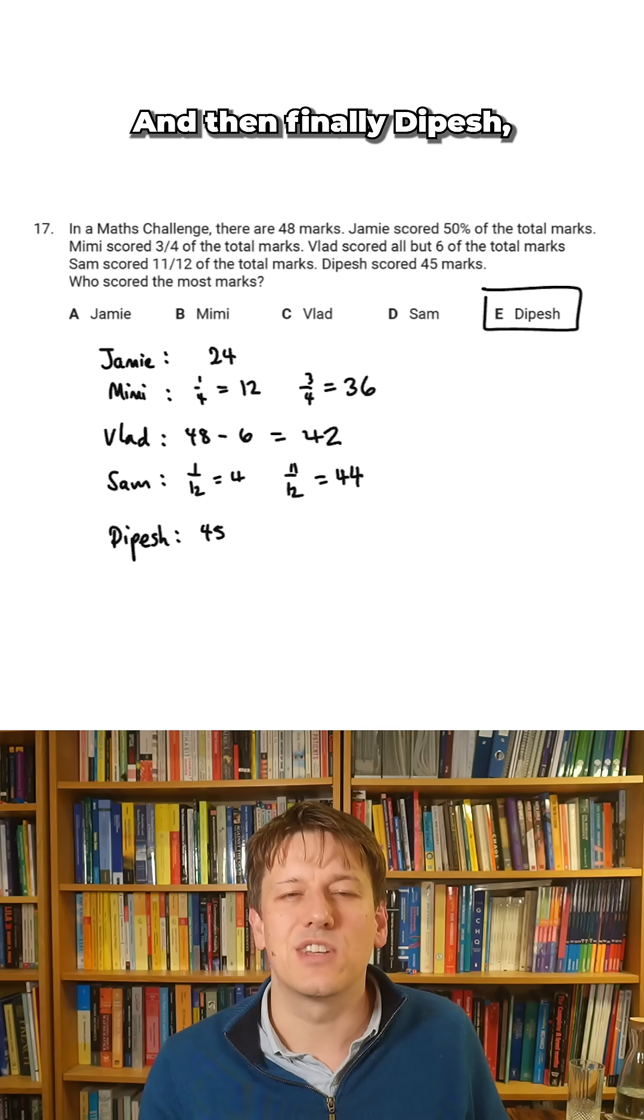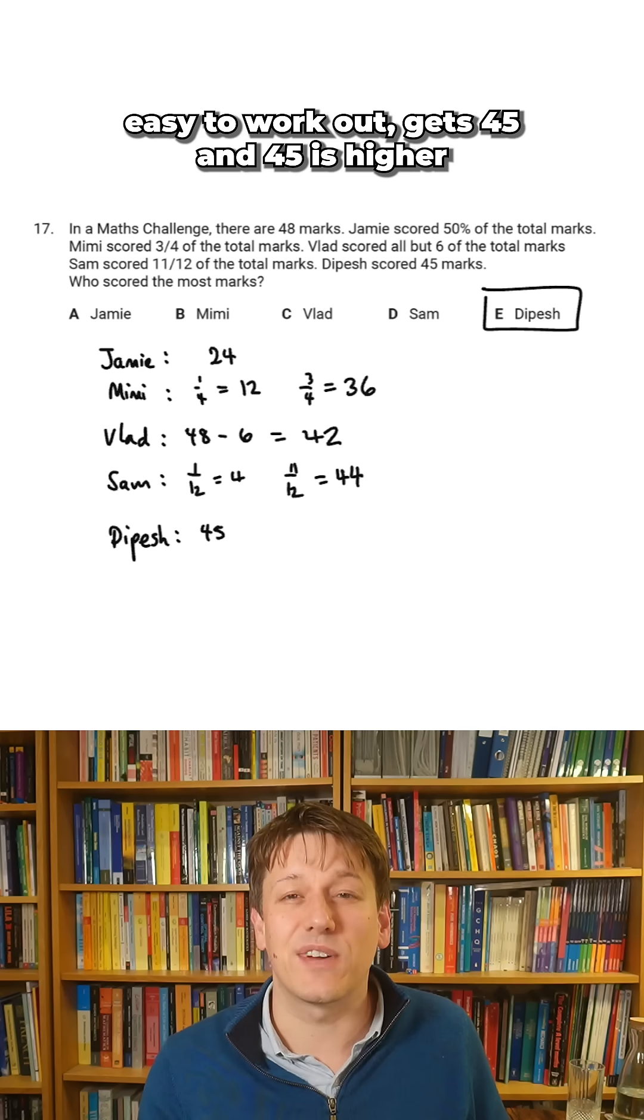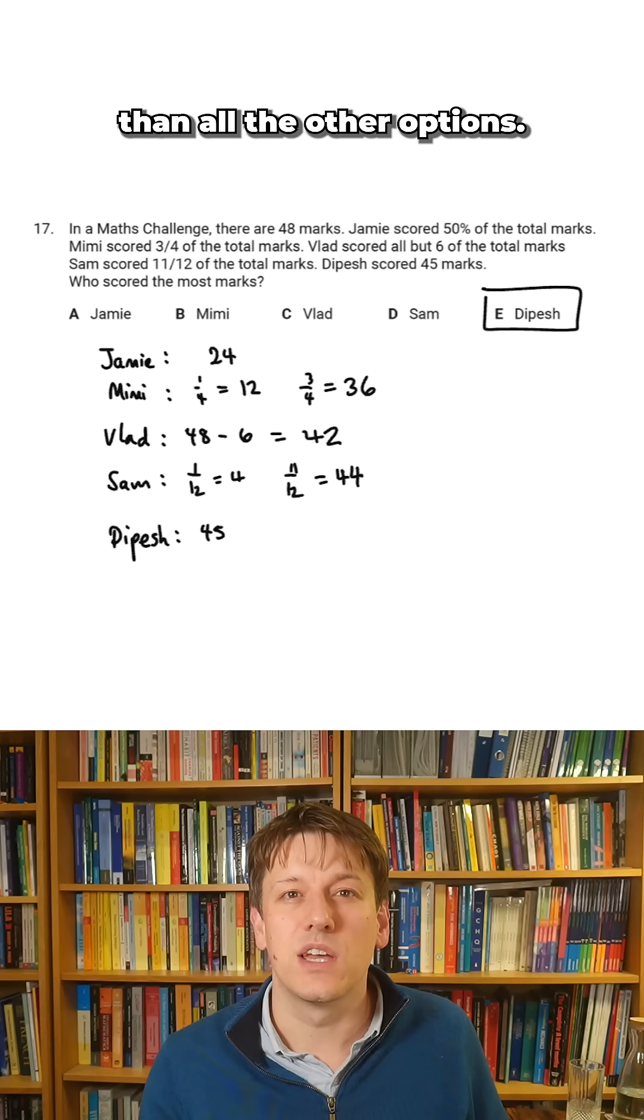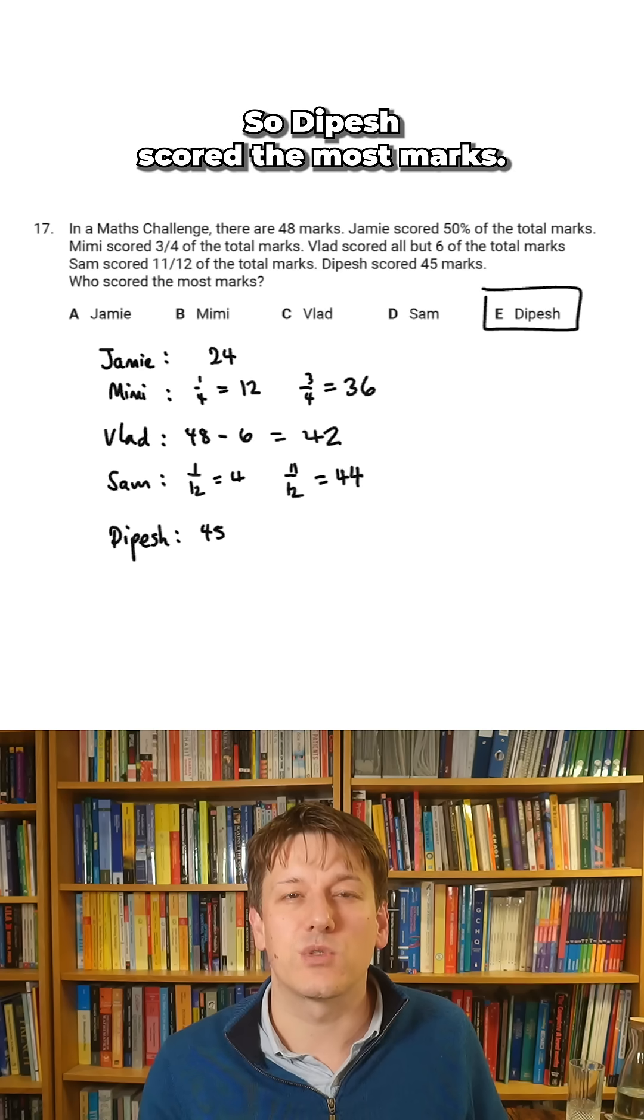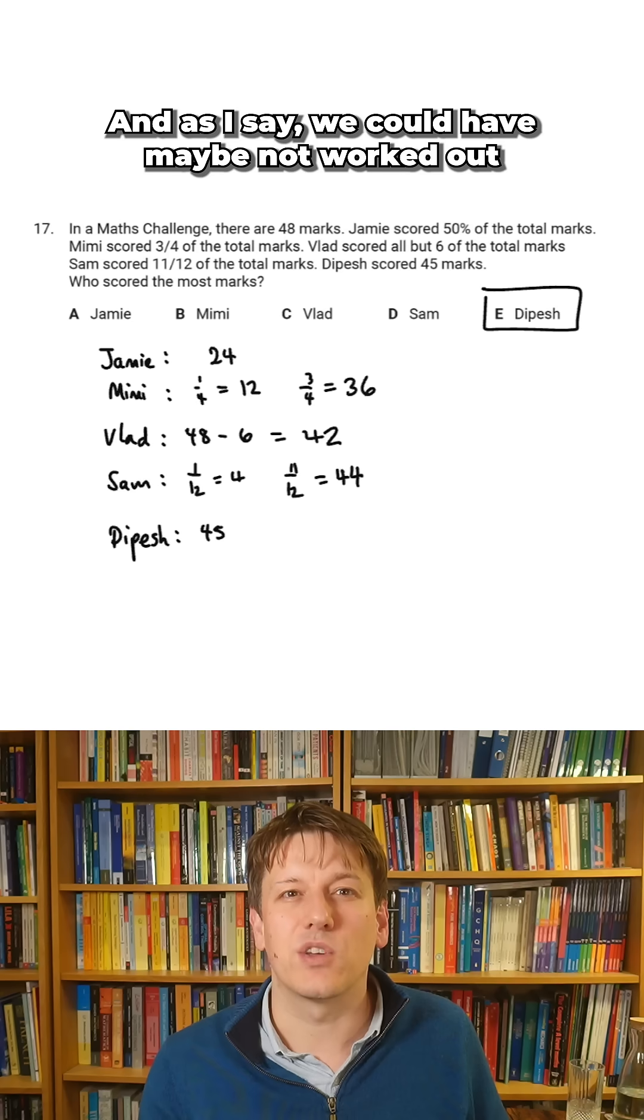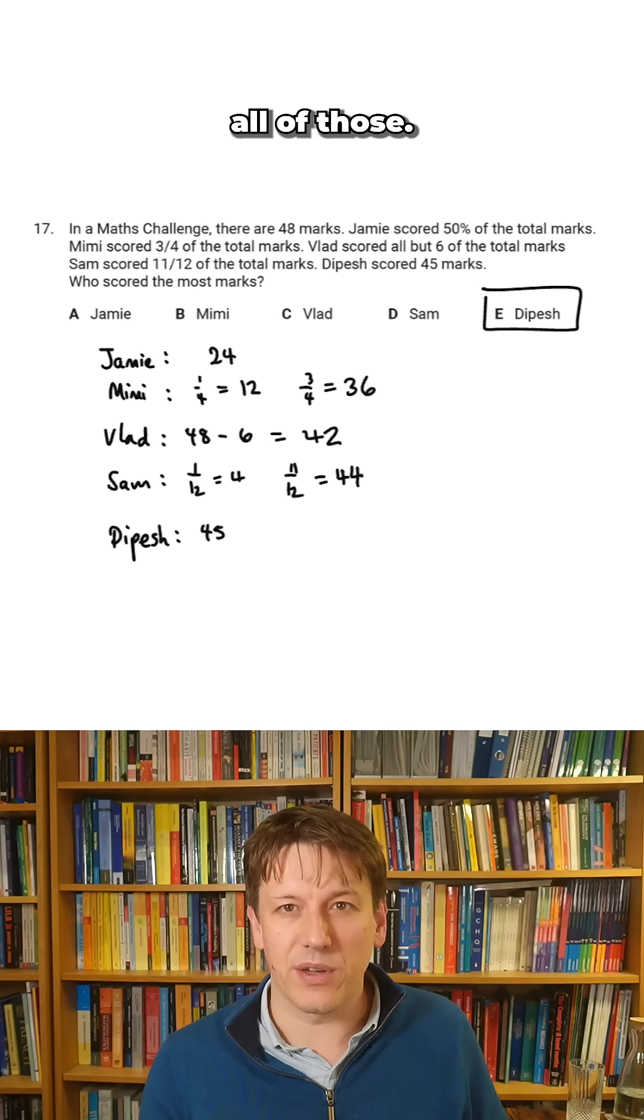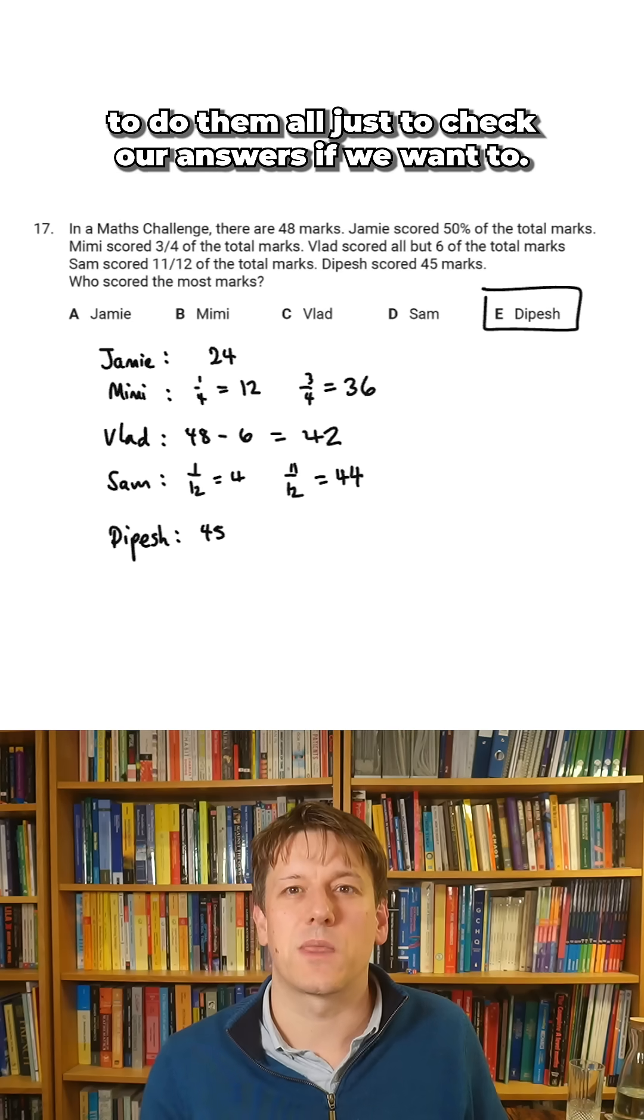And then finally, Dipesh, easy to work out, gets 45. And 45 is higher than all the other options, so Dipesh scored the most marks. And as I said, we could have maybe not worked out all of those, but it doesn't take too long to do them all just to check our answers if we want to.